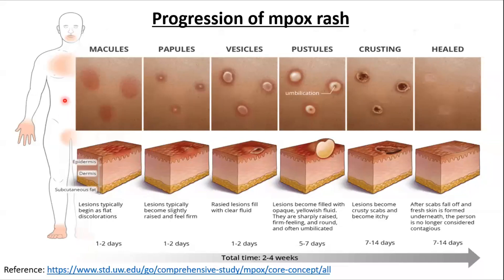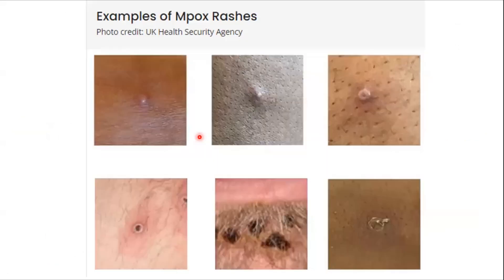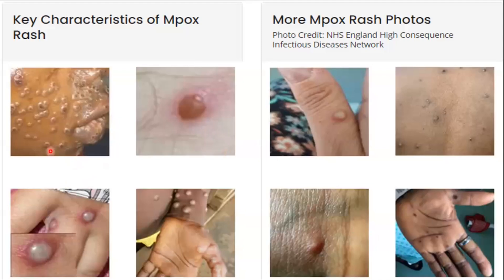This picture shows the progression of a monkeypox rash from macules to papules, to vesicles, to pustules, then umbilication, crusting, and healing. The next image shows the rash in detail — here you can see a papule, a pustule, umbilication, crust formation, and healing of the skin lesion.